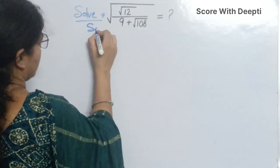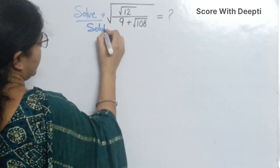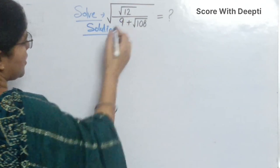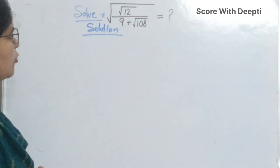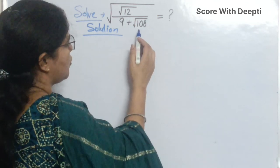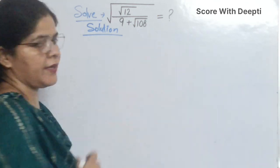Let's start the solution. In this problem the question is: square root of square root 12 over 9 plus square root 108.